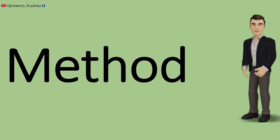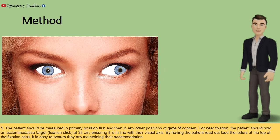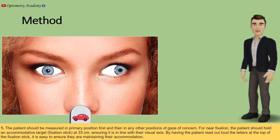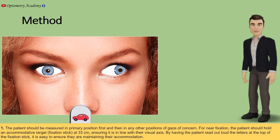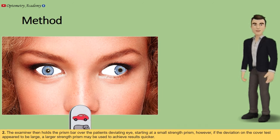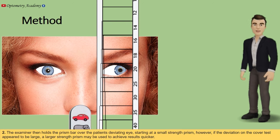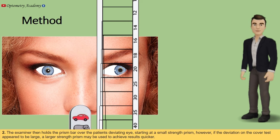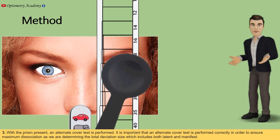The patient should be measured in primary position first, then in any other positions of gaze of concern. For near fixation, the patient should hold an accommodative target at 33 centimeters, ensuring it is in line with their visual axis. By having the patient read out loud the letters at the top of the fixation stick, it is easy to ensure they are maintaining their accommodation. The examiner then holds the prism bar over the patient's deviating eye, starting at a small strength prism. However, if the deviation on the cover test appears to be large, a larger strength prism may be used. With the prism present, an alternate cover test is performed.